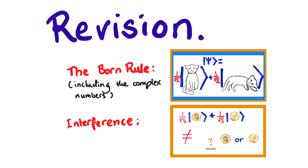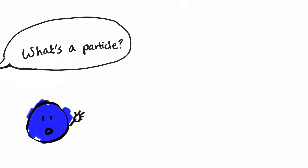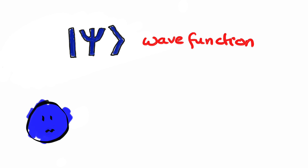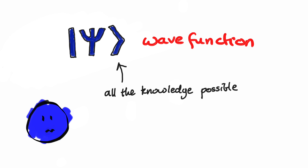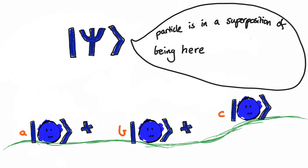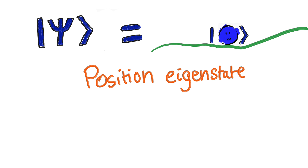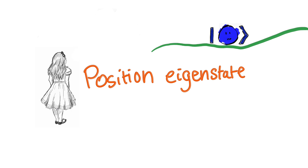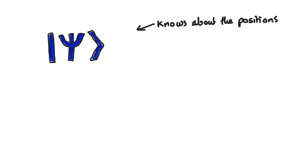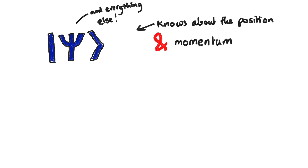So we've got this particle — it's got a wave function. Remember, the wave function of a particle contains everything we can know about that particle. For example, it might say that the particle is in a superposition of being here, here, and here, and so if you measure its position, then it will turn up in one of those places. There are these special wave functions called position eigenstates — this means that the particle really is in one spot; if you measure it, it will definitely be there. But wave functions don't just tell us about position — they also tell us about the speed or momentum of the particle.